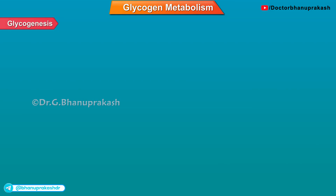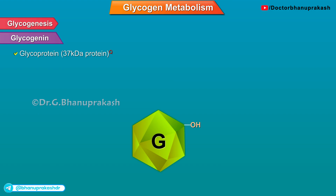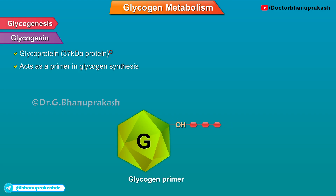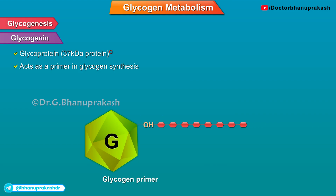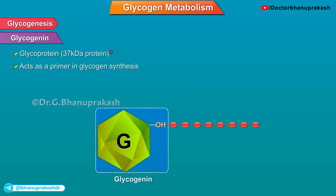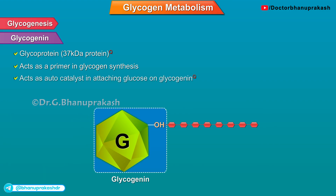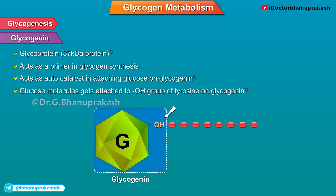An important point to be noted is that after 12 to 18 hours of fasting, liver glycogen is almost depleted. Regarding glycogenesis: to understand it properly, we must study glycogenin. Glycogenin is a glycoprotein, a 37 kilodalton protein, which acts as a primer in glycogen synthesis. This means glycogen synthesis will not start from scratch; new glucose molecules are added to pre-existing glycogen called the glycogen primer. The core protein molecule in the glycogen primer is glycogenin, which is synthesized from the liver. It also acts as an autocatalyst in attaching glucose to glycogenin, and glucose molecules get attached to the hydroxyl group of tyrosine on glycogenin.